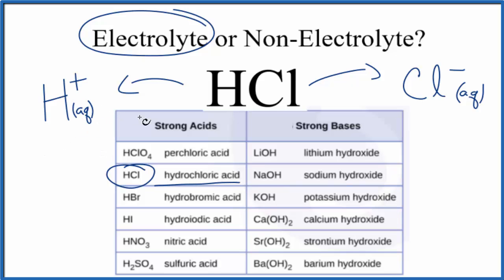So in answer to our question, HCl — hydrochloric acid — is an electrolyte. In fact, it's a strong electrolyte, like these other strong acids here on our list.